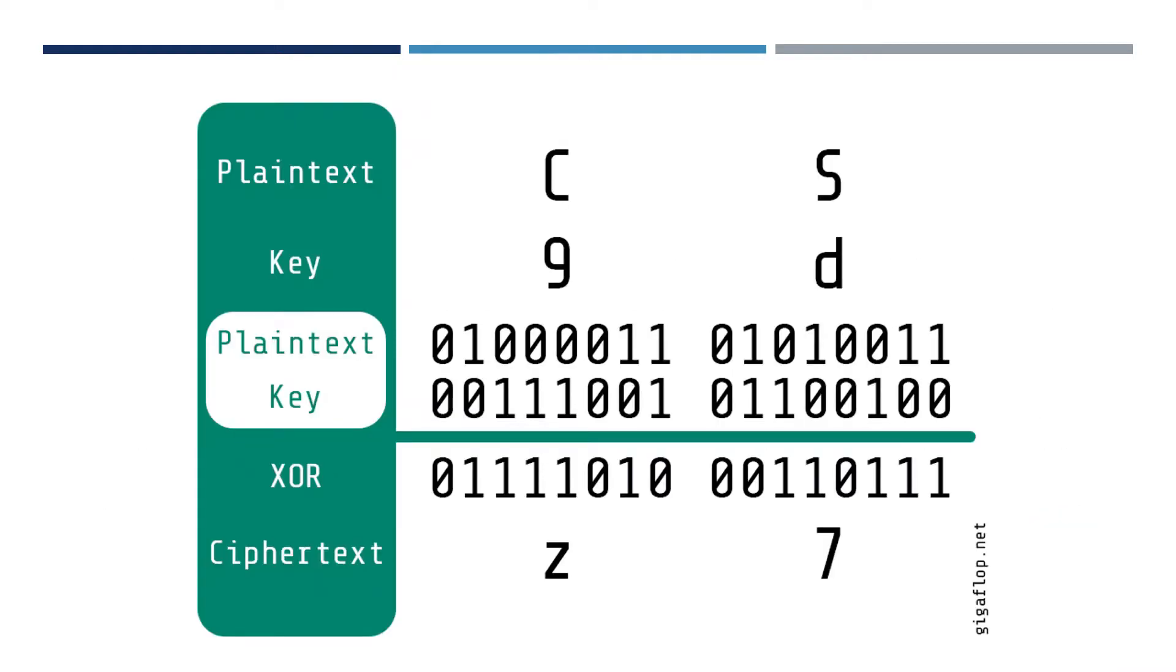So, a very quick example, and I'm just going to need to find the laser pointer. Okay, so up here we've got the plaintext, so we've just got two letters, C and S, and we have our random key, which is 9 and D.